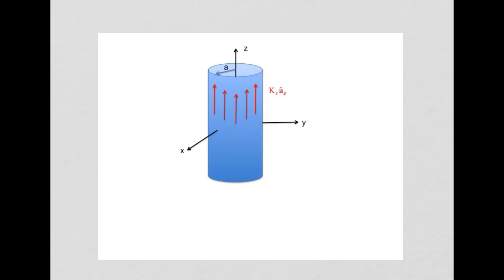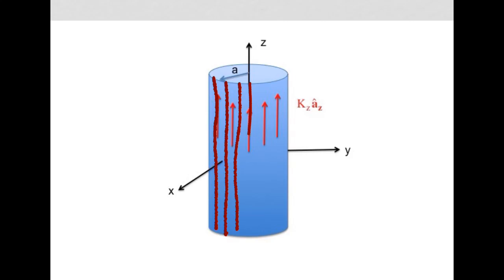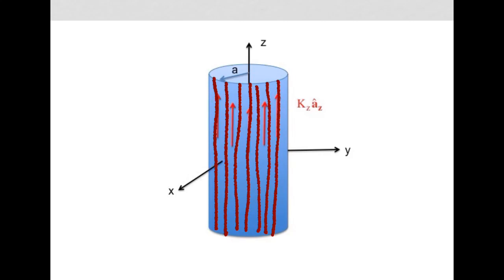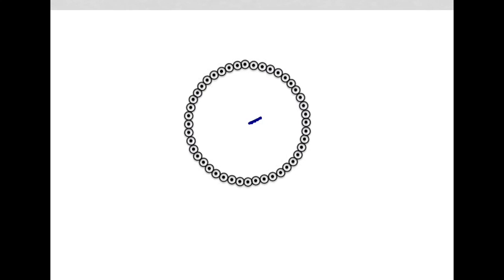We have a hollow cylinder aligned with the z-axis with a radius of a. On the outer wall of the cylinder, a sheet current density is flowing of magnitude k sub z in the direction a sub z. We can think of the current flowing as a collection of current filaments lined side by side around the cylinder. Now we're going to take a view looking down the z-axis — a cross section of the cylinder.